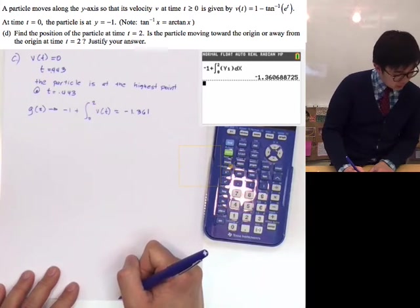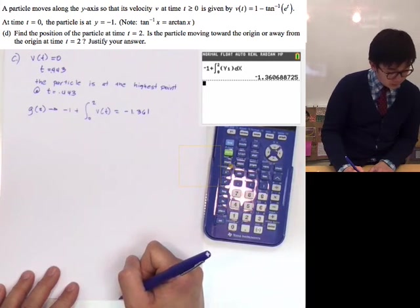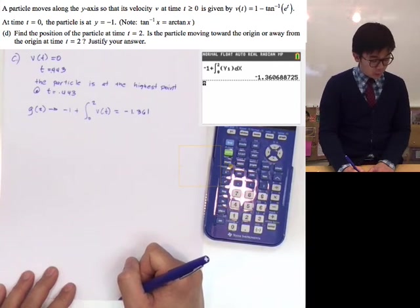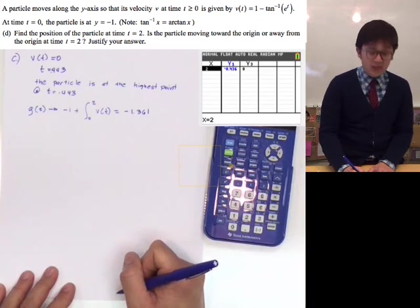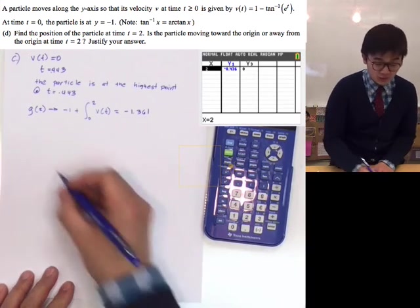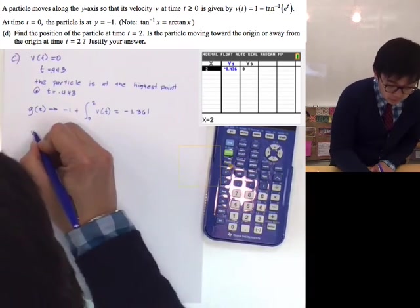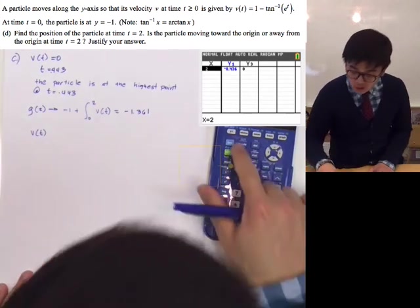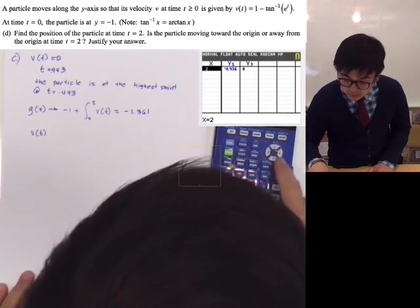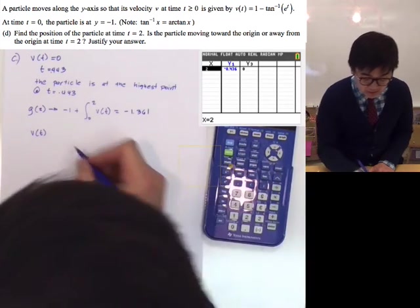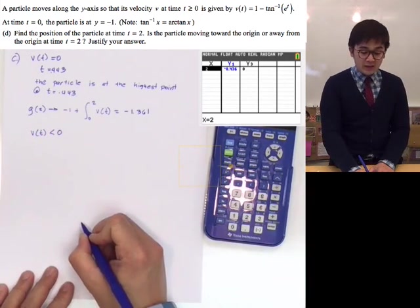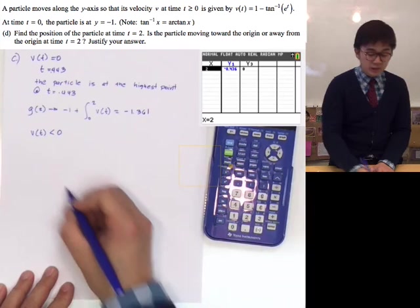Now to check whether the particle is moving towards or away from the origin, we check the value of our velocity function. We know from our previous work that the velocity at t equals 2 is negative, and our position g of 2 is also negative.